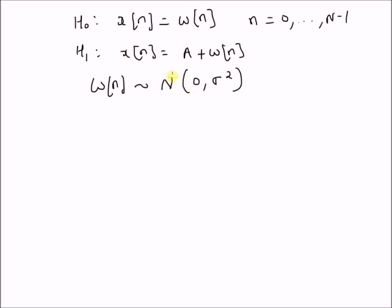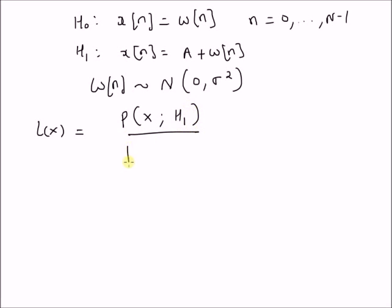For this problem, the likelihood ratio test can be written as follows: the ratio of the probability distribution of the observation vector x under the alternate hypothesis over the probability distribution of x under H0 should be greater than a threshold gamma.